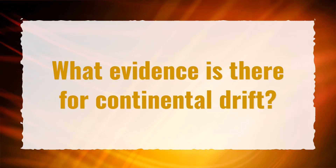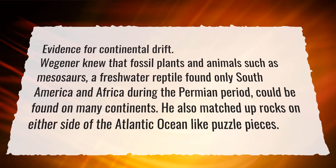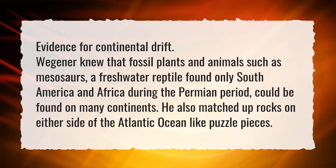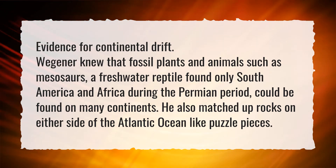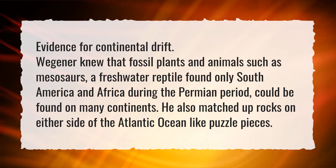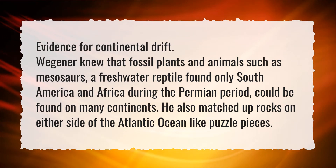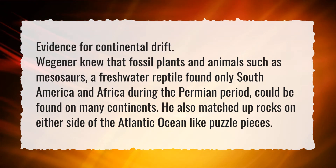What evidence is there for continental drift? Wegener knew that fossil plants and animals such as mesasaurs, a freshwater reptile found only in South America and Africa during the Permian period, could be found on many continents. He also matched up rocks on either side of the Atlantic Ocean like puzzle pieces.